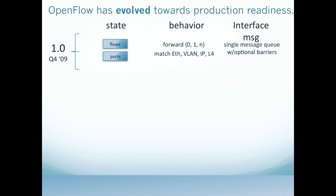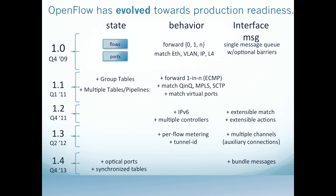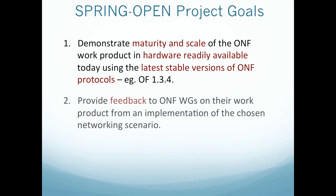OpenFlow has steadily evolved towards production readiness, starting with version 1.1 of the OpenFlow protocol that came out a few years ago, and more recently the more stable versions of 1.3 and 1.4. From the ONF's point of view, they wanted to start a project which would demonstrate the maturity and scale of the ONF work product in hardware that is readily available today. You don't have to wait for new hardware — you can use hardware that exists today with the latest stable versions of the ONF protocols like OpenFlow 1.3.